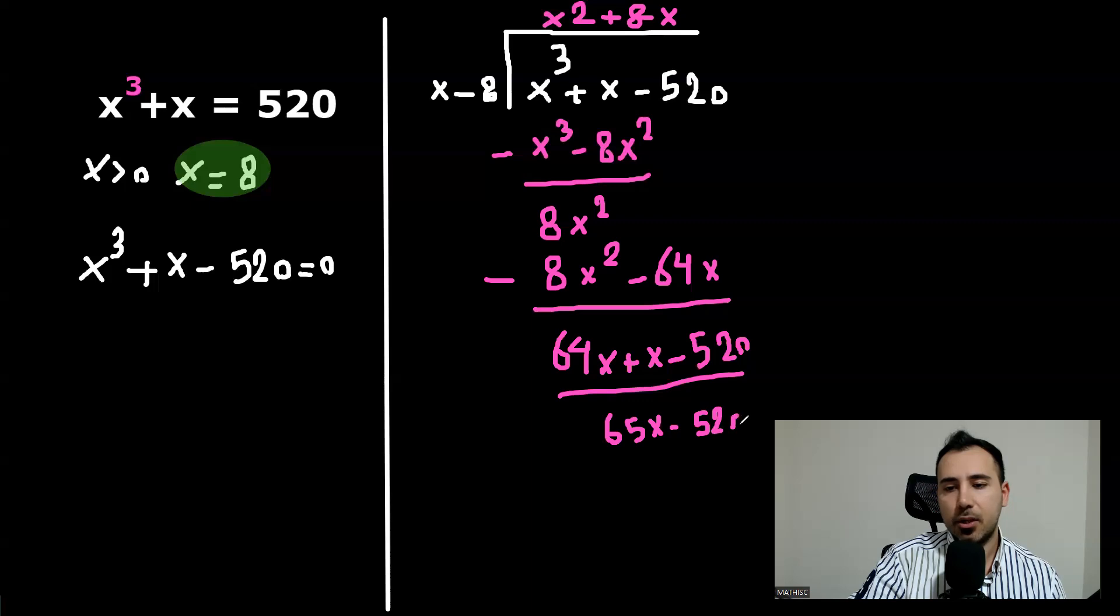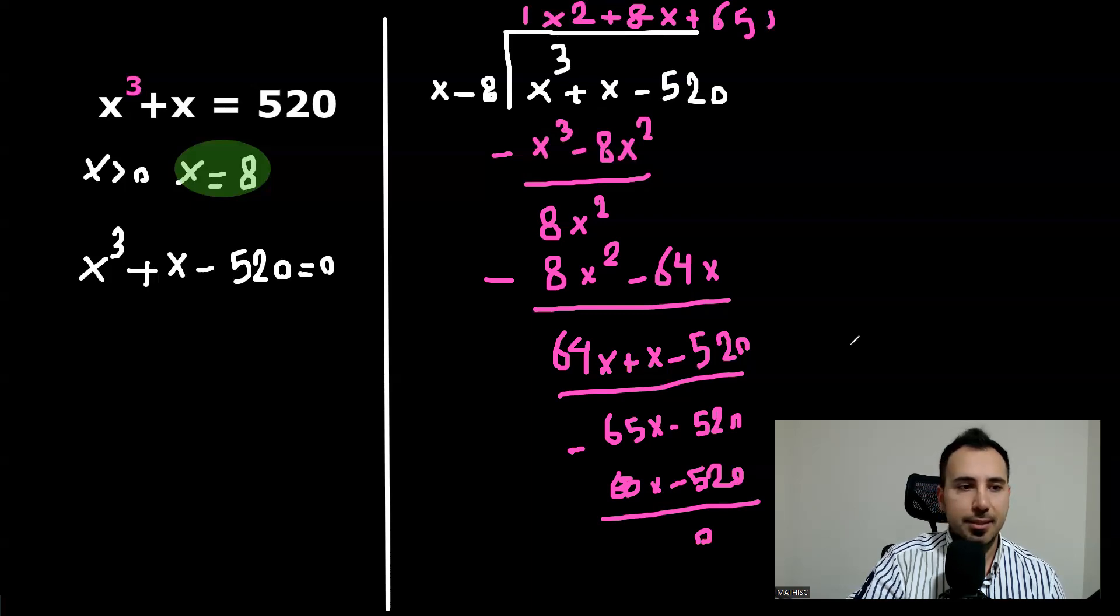So the final thing would be positive 65. And then the same thing will be created here. Minus 65x minus 520. This will be zero again. So we were only looking for this and now we have it. So I'm going to write this as x minus eight.